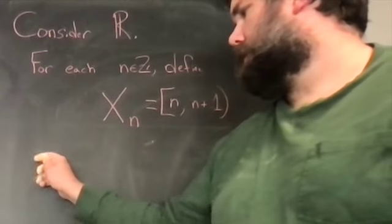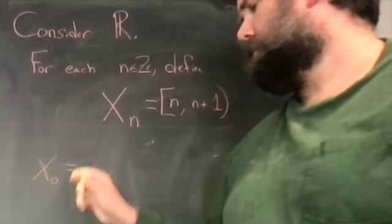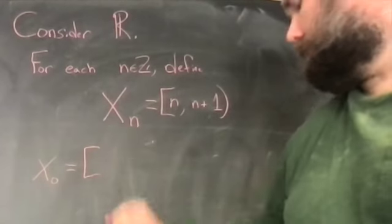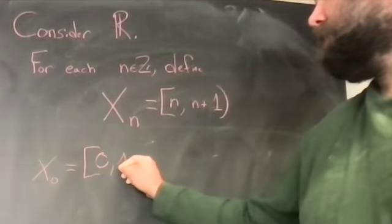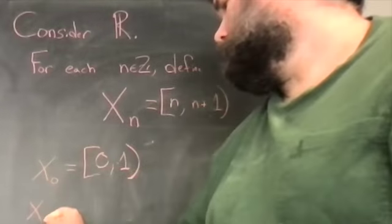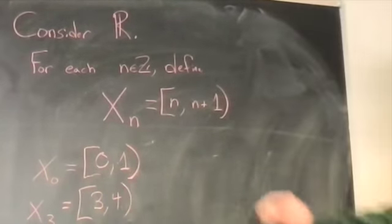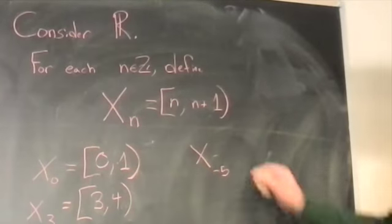It'd be the interval that includes 0, but does not include 1. Would X sub 3 be from 3 to 4, including 3, but not including 4? What about X sub negative 5? Negative 4.